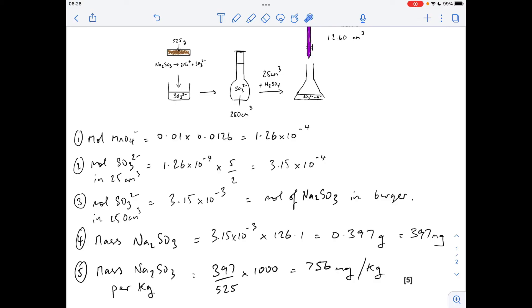we're going to just see if it falls within the legislation value. So the mass of sodium sulphite per kilo is going to be the mass in the burger divided by the mass of the burger times 1,000. Obviously 1,000 grams in a kilo. So that's coming out at 756 milligrams per kilogram. So it is within legislation because that's less than the 850 milligram per kilo limit.